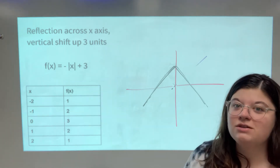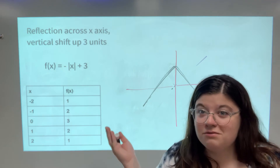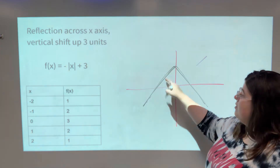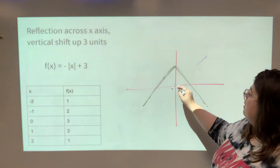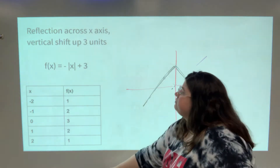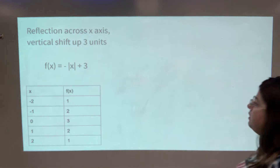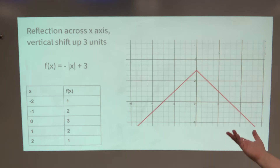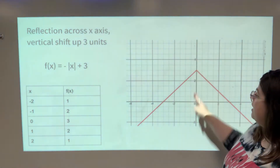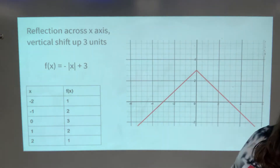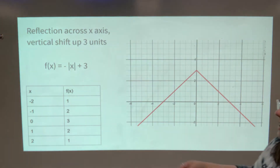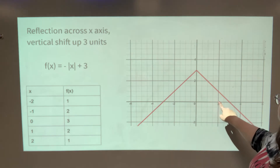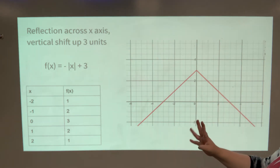Another way to sketch it is to plot points from the table of values. At x equals negative two, y is one; at x equals negative one, y is two; at x equals zero, y is three — that's the maximum. So the graph looks like an upside-down V with a maximum at (0, 3), which checks out with the table. The last point at (2, 1) confirms it. Those are four different ways to represent a function.